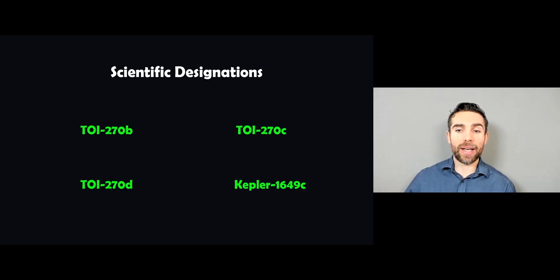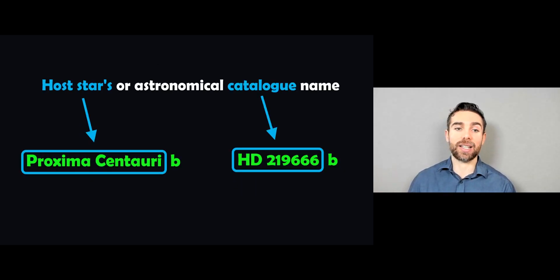And we're going to have a look at how it gets that scientific designation, depending on what star it's orbiting, what planet it is. So the first part of that can relate to the host star or the astronomical catalogue of the star. So, for example...